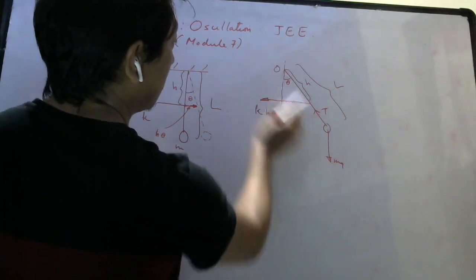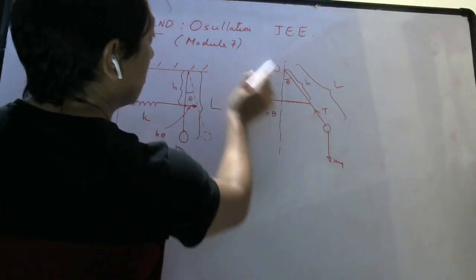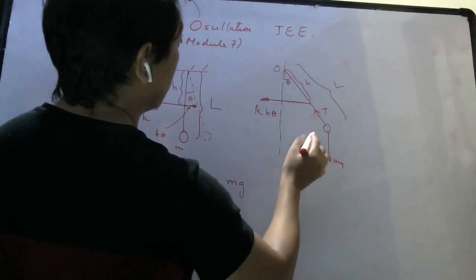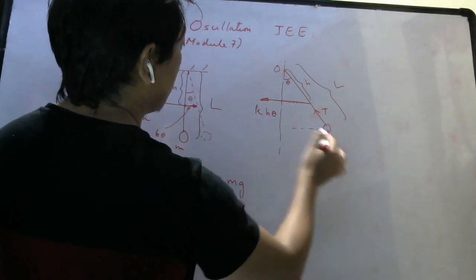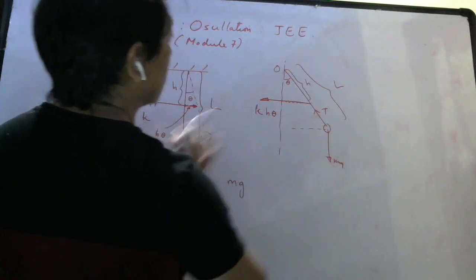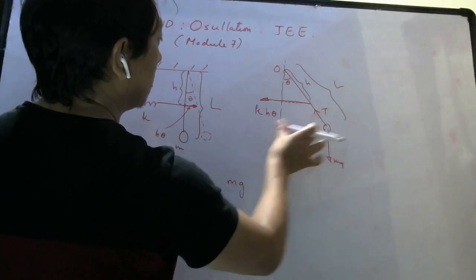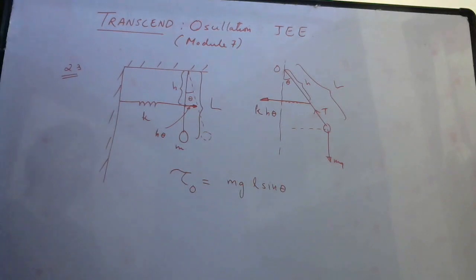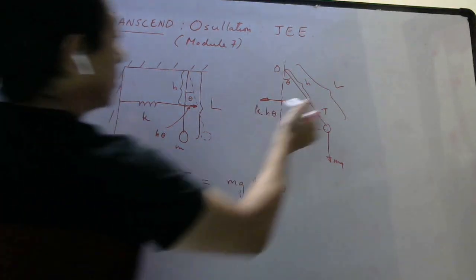This tension will not create any torque because it is passing through O. Mg torque will be Mg into R perpendicular. This is your R perpendicular. If you extend the line of force, this will be R perpendicular. And this is L, so this will be L sine theta. So this is the torque due to Mg.